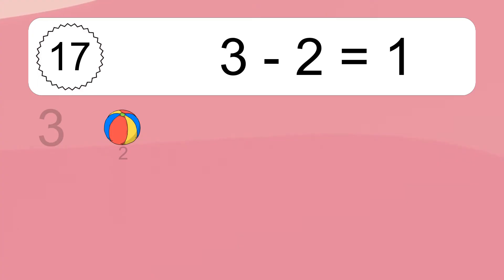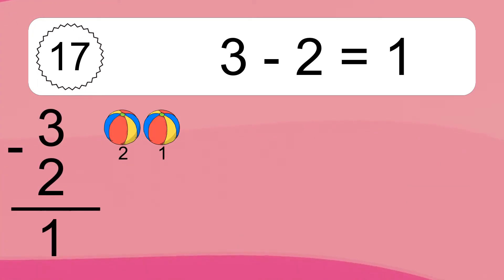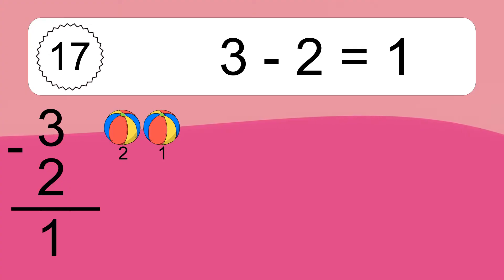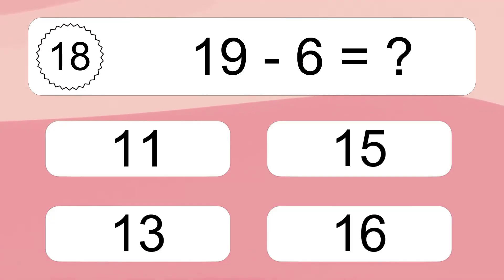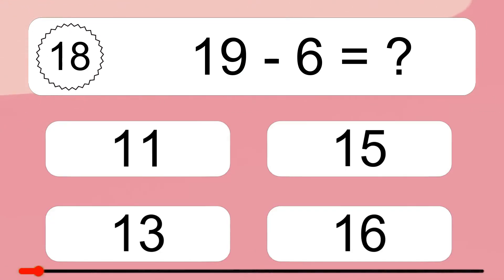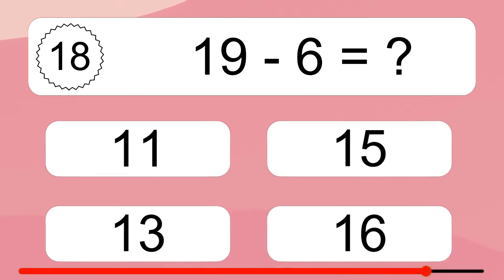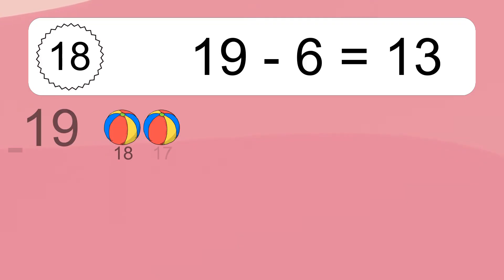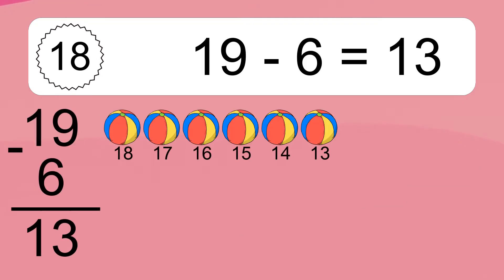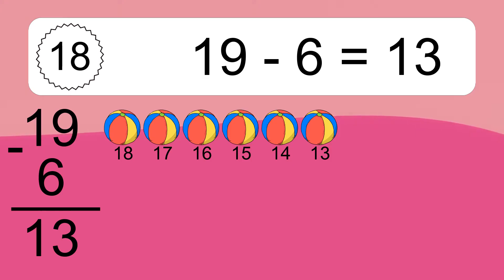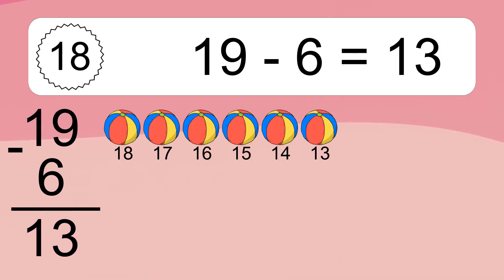3 minus 2 equals 1. Let's count it: 2, 1. 19 minus 6 equals what? 19 minus 6 equals 13. Let's count it: 18, 17, 16, 15, 14, 13.